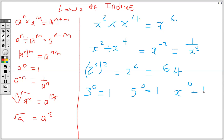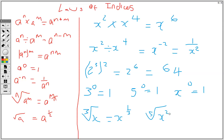If I have the cube root, it is the same thing as writing it as x to the 1/3. If I have the 5th root of x squared, it is the same thing as x to the 2 over 5.